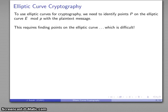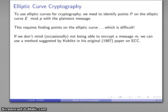We have to find points on the elliptic curve, but the problem is that finding points on an elliptic curve is difficult. If we don't mind occasionally having a failure of encryption, Koblitz's original 1987 paper on elliptic curve cryptography suggests a method for finding points.